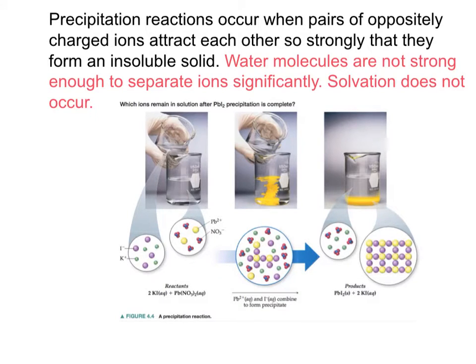So precipitation reactions occur when pairs of oppositely charged ions attract each other so strongly that they form an insoluble solid. Meaning the water molecules that are present are not strong enough to separate the ions significantly. Meaning, solvation does not occur.